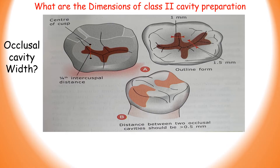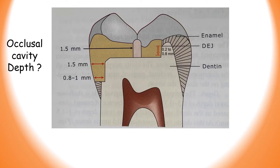The depth of the occlusal cavity — your answer should be 0.2 to 0.8mm below the dentinoenamel junction. This is the dentinoenamel junction. When we include the enamel from the occlusal surface, this depth turns out to be 1.5mm. So your answer will be 0.2 to 0.8mm below the DEJ, and from the occlusal surface it is 1.5mm.